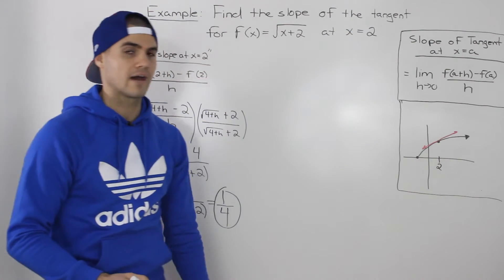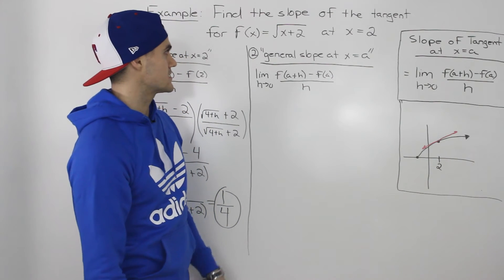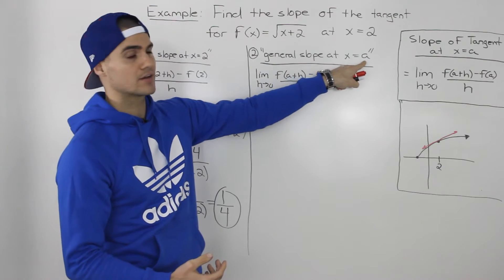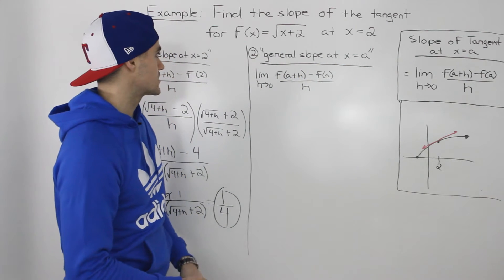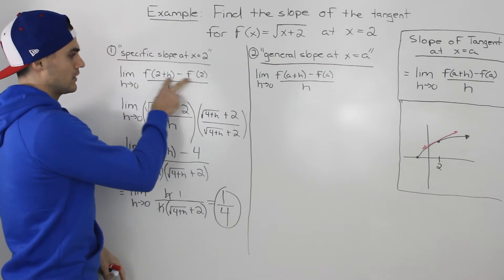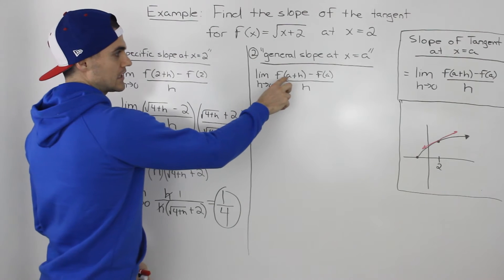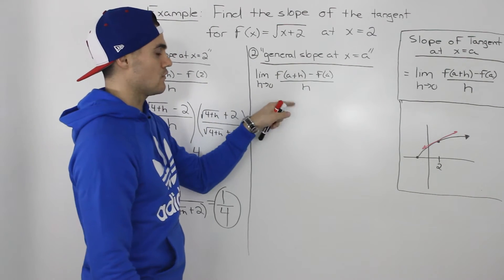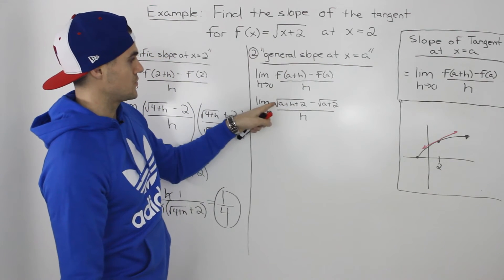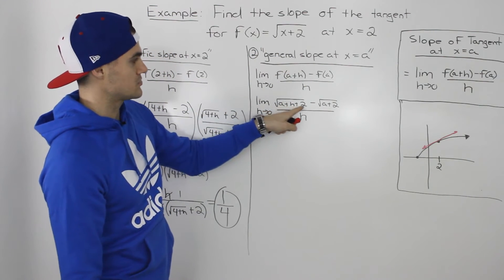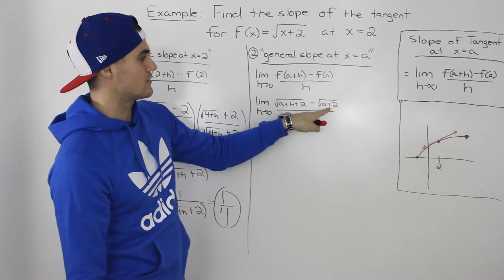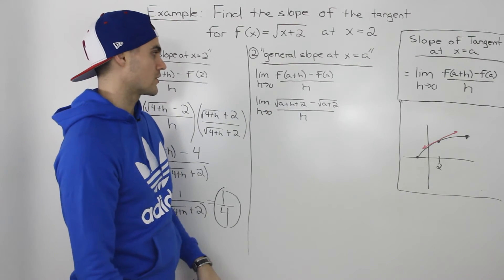Now let's do it a different way. The second way is to find the general slope of the tangent for this function at an x value of a — a general point. We use the same formula but keep a as itself instead of plugging in 2. Plugging in a plus h for x gives us the square root of a plus h plus 2, and plugging in a for x gives us the square root of a plus 2. This is all over h.